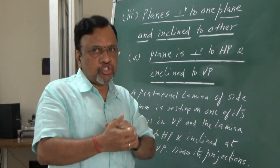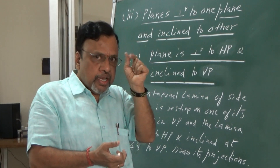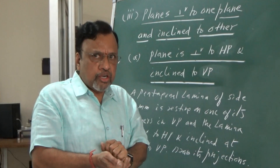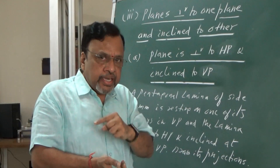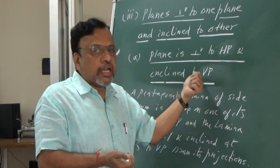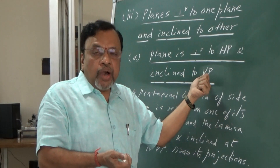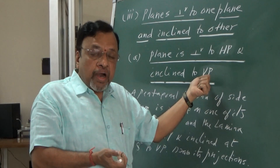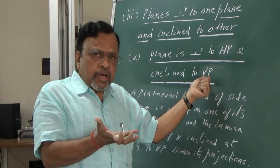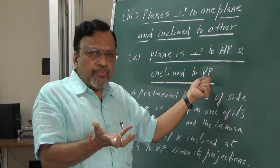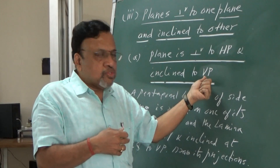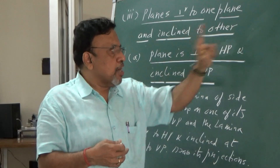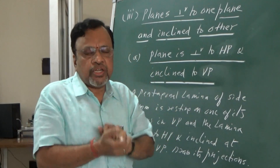Now we have stage 1 and stage 2. In stage 1, I need to assume something. Since the lamina is inclined to VP, I will assume that the lamina is parallel to VP. Now since the lamina is parallel to VP, the true shape and size will be seen in the front view. So I need to start from the front view — that is my first conclusion.